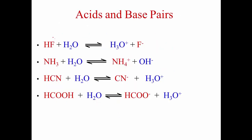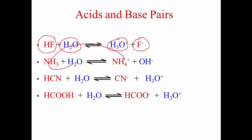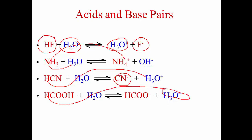Your conjugate pairs are on opposite sides. The fluoride ion is the conjugate base of hydrofluoric acid, and water is the base with the hydronium ion as the conjugate acid. You can always tell from a complete equation where that proton moved. It had to go to ammonia to form the ammonium ion, leaving the hydroxide ion. Here, it had to go to the water molecule, forming the hydronium ion and leaving the cyanide ion. Here, it had to be transferred to water to form the hydronium ion, leaving the HCOO⁻ ion.